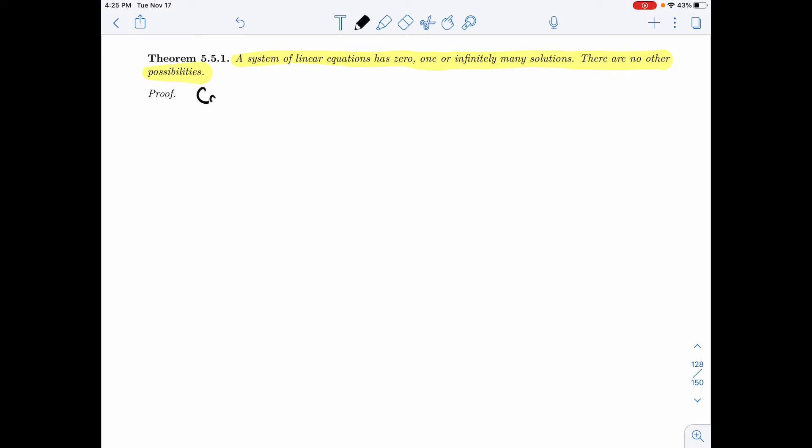Let's say that our system is Ax = B. We rewrite it in the matrix algebra world. I want to prove that these are the only possibilities.